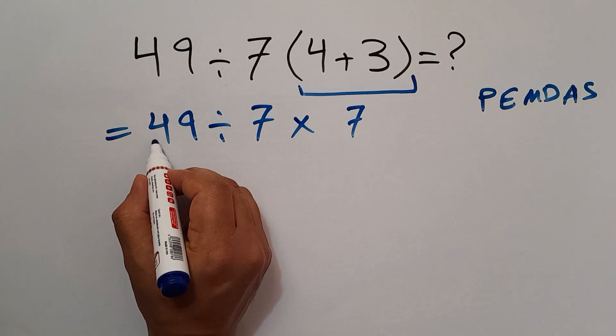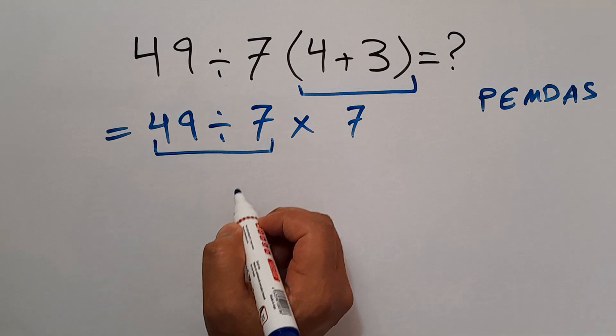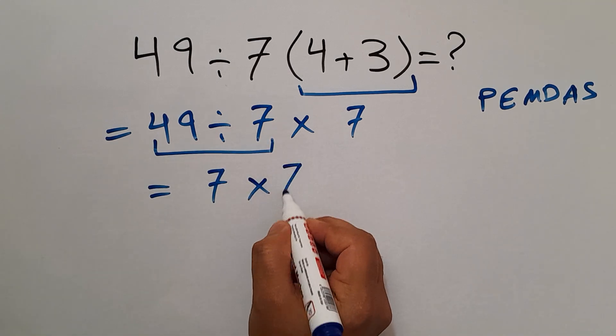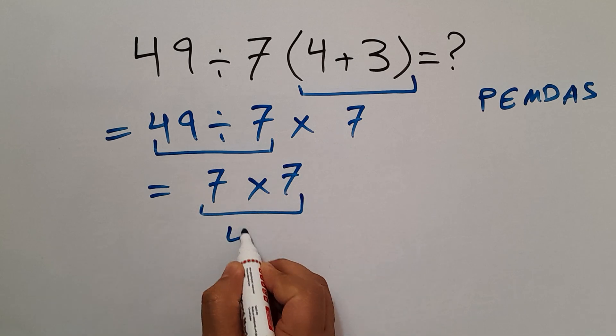So first this division, 49 divided by 7, gives us 7. So 7 times 7, which equals 49.